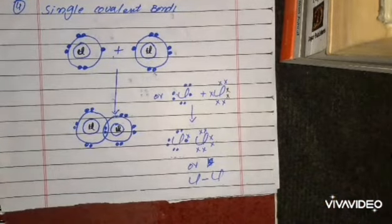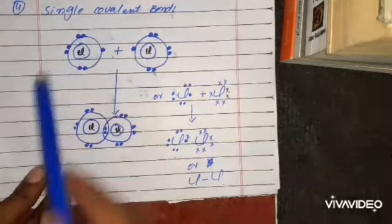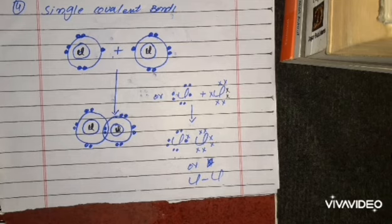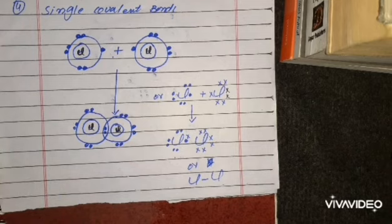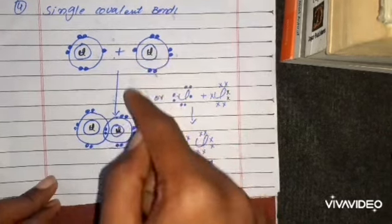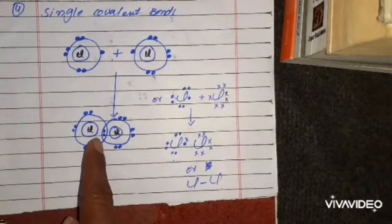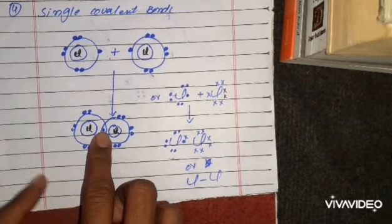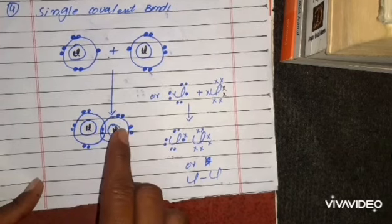Now we will see the single covalent bond with an example. We have here chlorine. Chlorine has seven electrons in its outermost shell. To satisfy its octet rule — because stability requires eight electrons in the outermost shell — it needs only one more electron. For that purpose, it shares one electron with another chlorine atom. After sharing, they both have two shared electrons in the outermost shell.